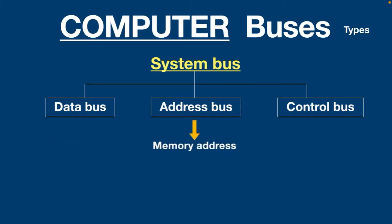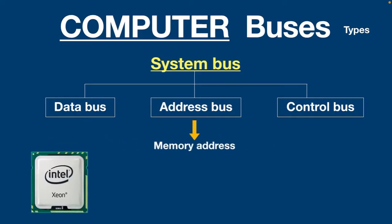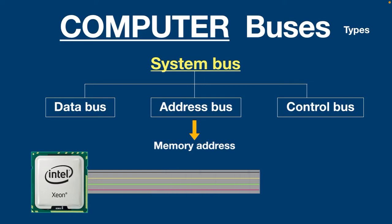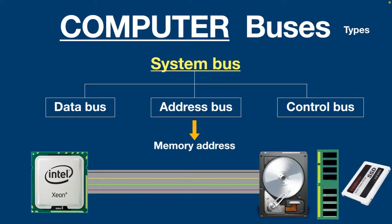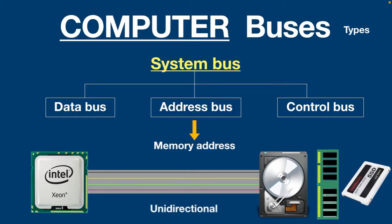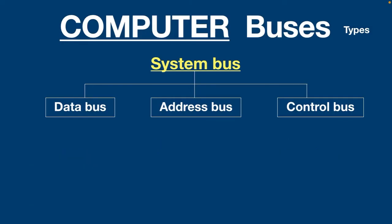The address bus contains the memory address of where data is located in the computer, whether it's in the hard disk, RAM, or SSD. Basically, it tells the computer from where it has to send the data and from where it has to get the data. The address bus is unidirectional, meaning data travels in one direction only.